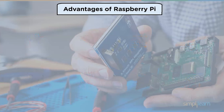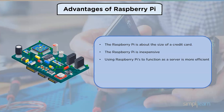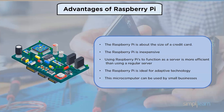Now let us look at the advantages of Raspberry Pi. Raspberry Pi is about the size of a credit card and is inexpensive. Using Raspberry Pi to function as a server is more efficient than using a regular server. The Raspberry Pi is ideal for adaptive technology because it can display visuals as well as play movies. The micro computer can be used by small businesses on a tight budget to use or build new technology that integrates the product.